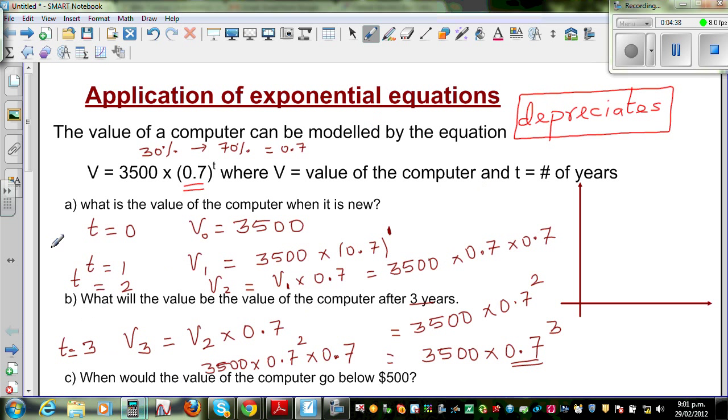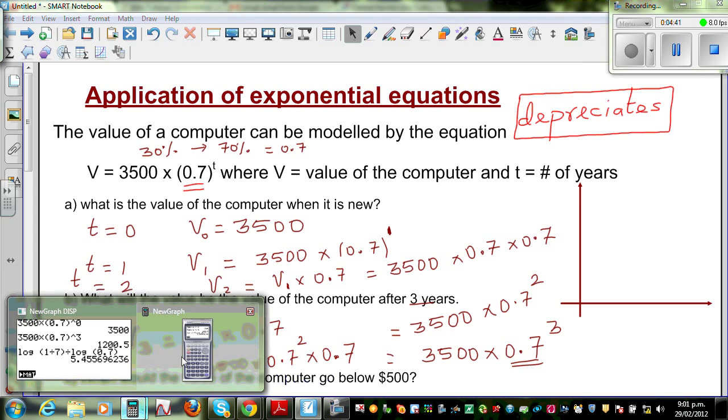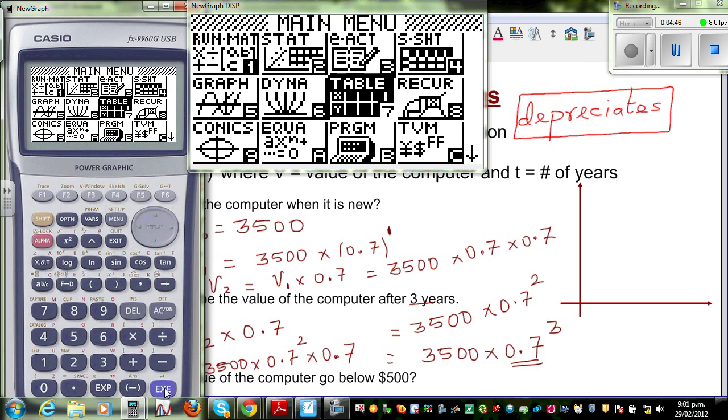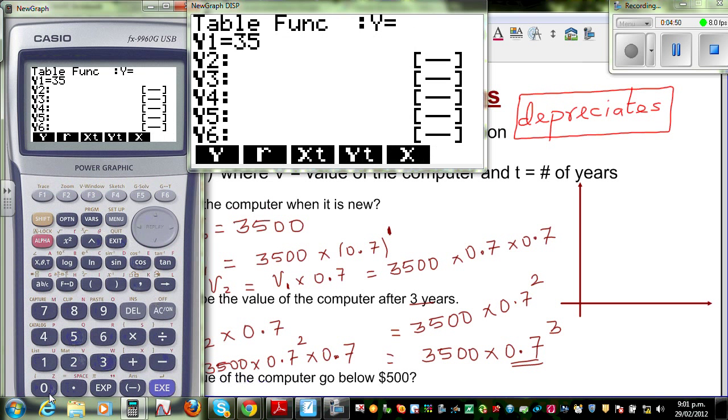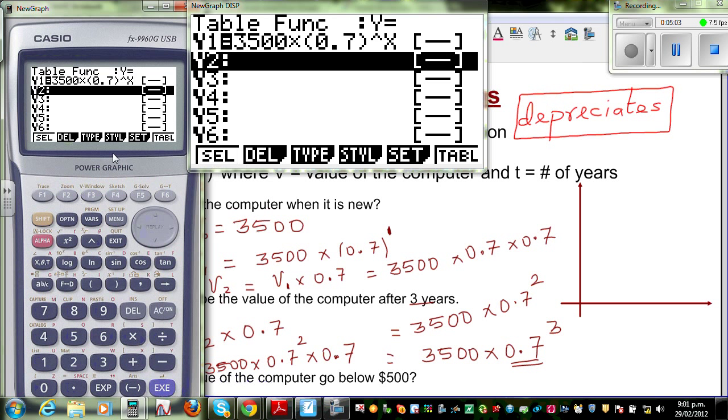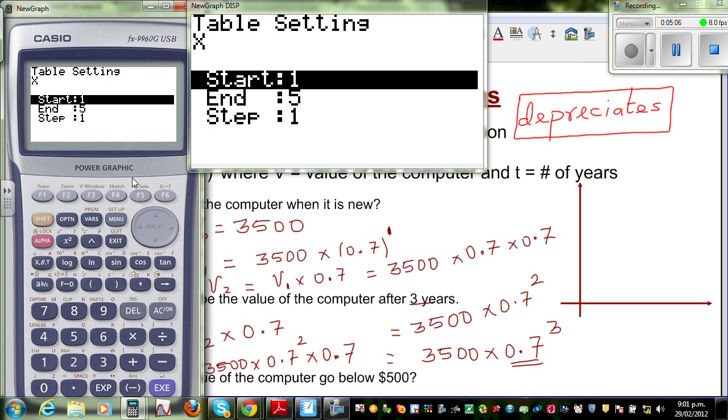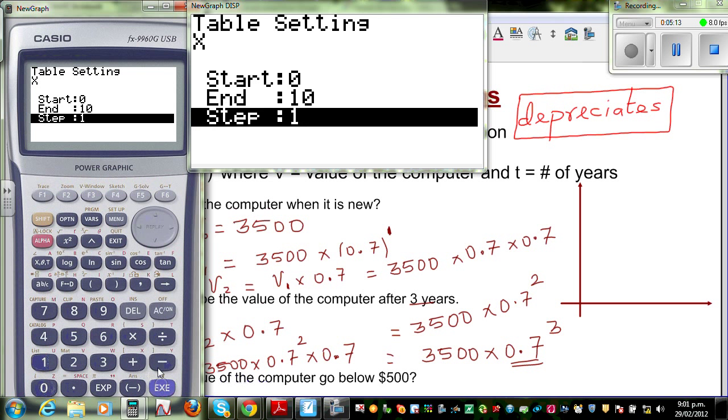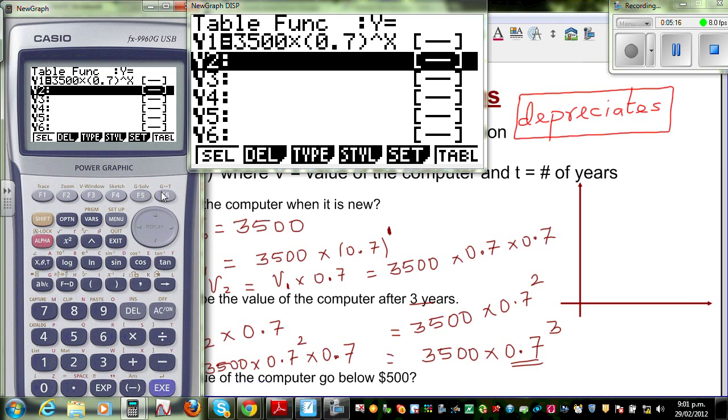Okay, now how to do this on the calculator. So, this is my calculator. Menu, you go to your table menu. So now I'm going to type in 3500, times 0.7 raised to x. So, your x is your t, and your y1 is your v. And you set, press F5, which is set. So, they're asking you where do you want to start. So, I want to start at 0 years, and I want to finish at 10 years.